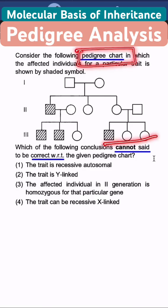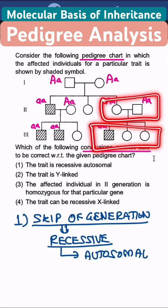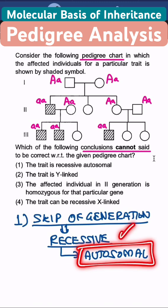Consider the following pedigree and identify which statement cannot be correct out of the four options. In this particular pedigree, you can see there is a skipping of generation. That's why it is an example of autosomal recessive type.